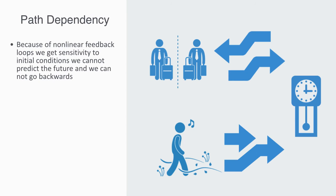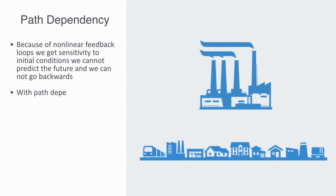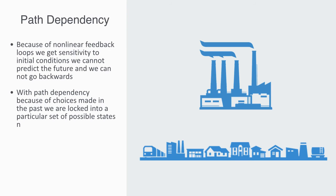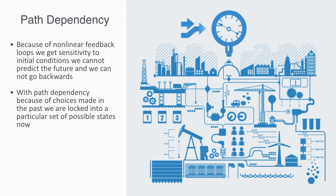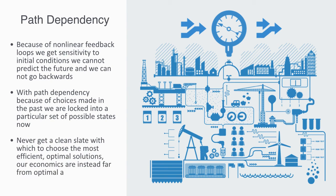With path dependency, because of choices made in the past, we are locked into a particular set of possible states now. An example of path dependency would be a small town that is built around a factory. It makes more sense for a factory to be located a distance away from residential areas for various reasons such as pollution. However, it is often the case that the factory was built first, and the workers needed homes and amenities built close by for them. It would be far too costly to move the factory once it has already been established, even though it would better serve the community from the outskirts of town. The net result of path dependency is that we never get a clean slate on which we can choose the most efficient, optimal solution. Our economies are instead far from optimal and thus far from equilibrium — everything does not just smooth out to a homogeneous state, but we go on with a heterogeneous state to our economies, with small pockets that are different because of the historical events that brought them to this current heterogeneous state.